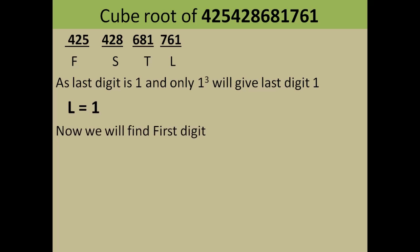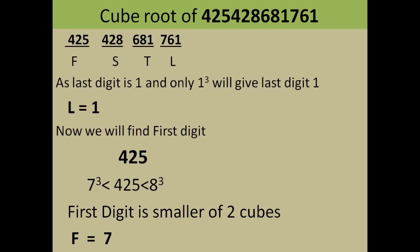Now we find the first digit F. Take the first pair, 425, and see between which two consecutive cubes it lies. 425 lies between 7³=343 and 8³=512. Your first digit is the smaller of the two, which is 7. So your first digit F becomes 7.